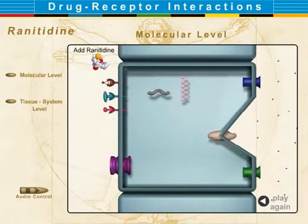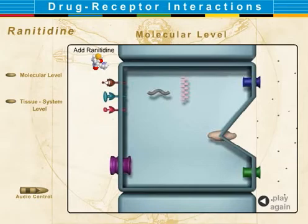The proton heads for the luminal side proton pump, and under the influence of ATP, exchanges for potassium, while the chloride ion exits into gastric fluid through a chloride channel, shown in green.